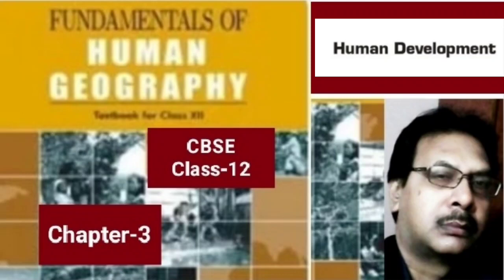On the basis of the level of human development, countries can be classified into four categories. This categorization has been done on the basis of the human development index scores given to different countries by the UNDP. The four categories are: countries with very high HDI, countries with high HDI, countries with medium HDI, and countries with low HDI. Earlier, countries were categorized into only three groups, with very high and high HDI countries clubbed together.